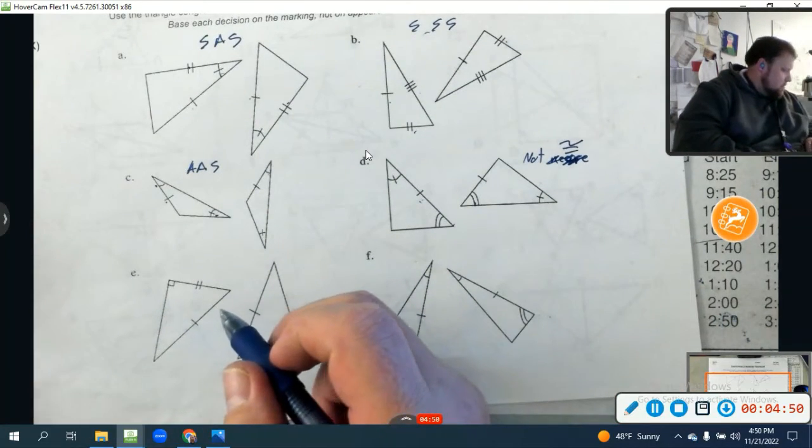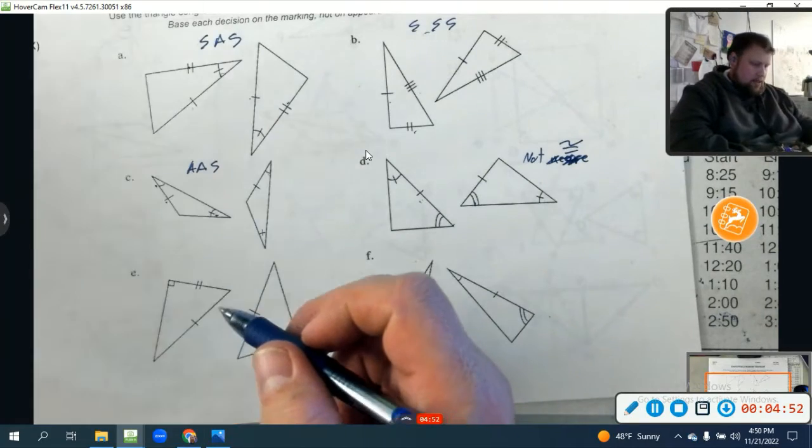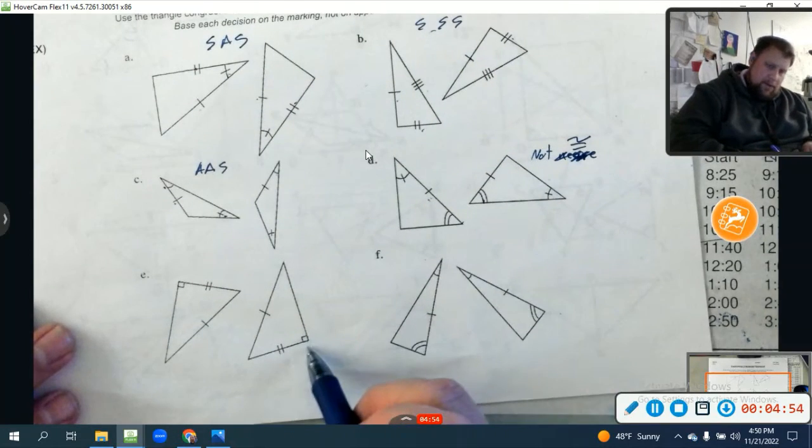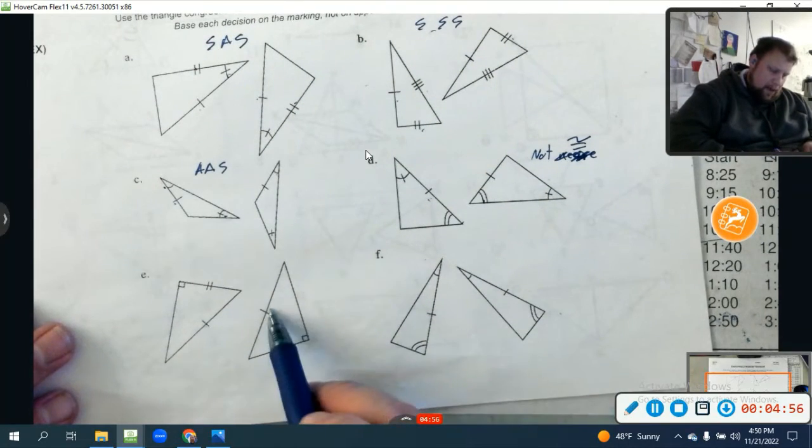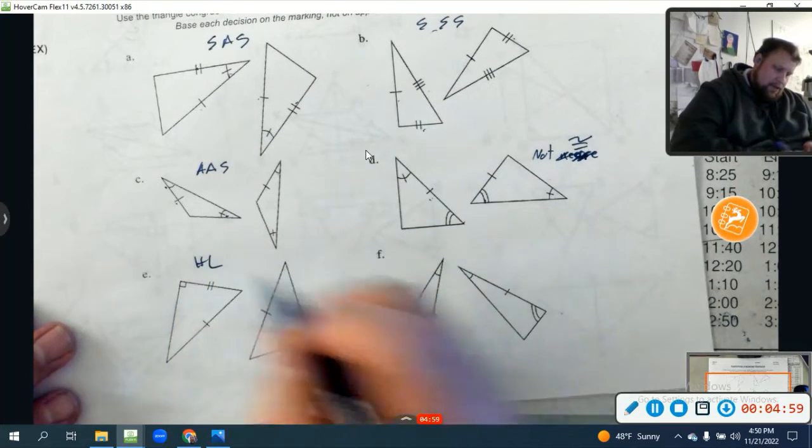Let's go ahead and look at this one right here. This one's a 90-degree angle. We have hypotenuses, and we have a leg. This is hypotenuse leg.